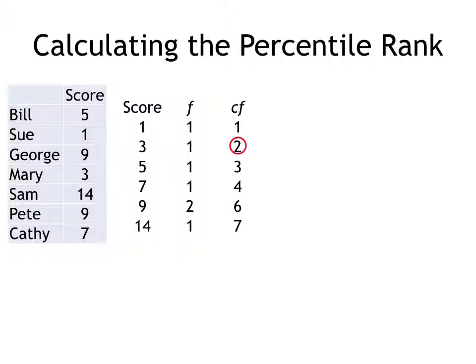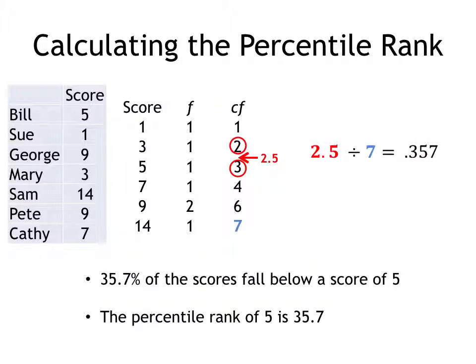We know that two scores are below that score of five. I went to the previous score, and it accounted for two of them. Between a score of three and a score of five, we can assume there would be 2.5 scores accounted for, a cumulative frequency of 2.5.